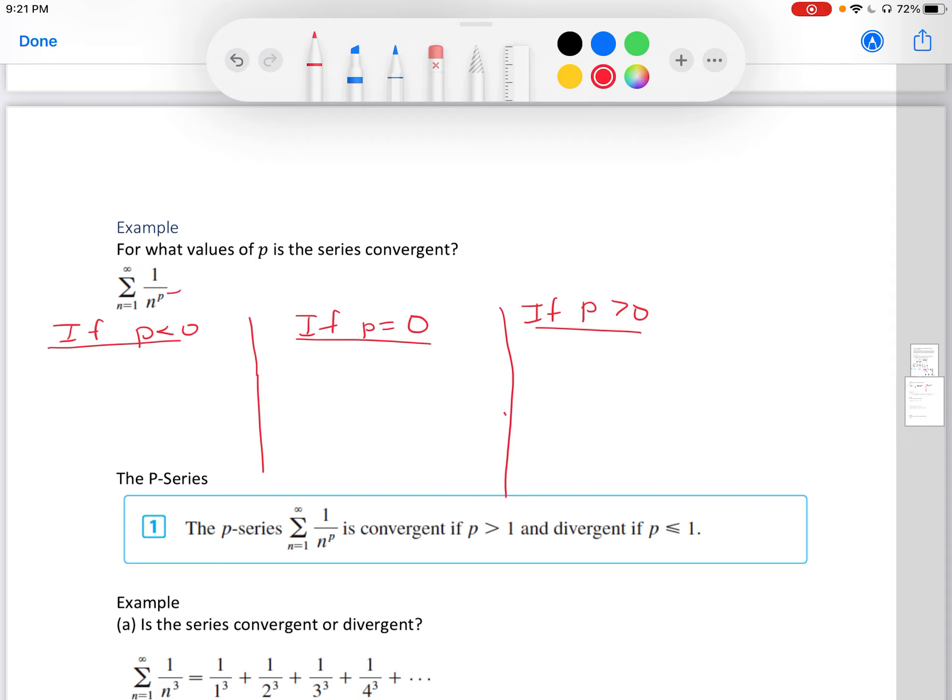If p is less than 0, we're going to have a negative exponent. So we're essentially going to have the limit as n is approaching infinity of 1 over n to the negative p, which is going to result in an integer. This is going to be getting bigger and bigger, so it's approaching infinity. If p is 0, we have n to the 0 power, which gives us 1.